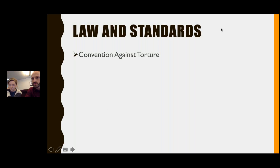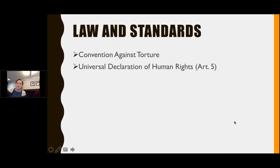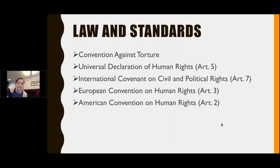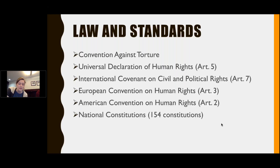How is health situated in the context of torture? The general definition of torture comes from the Convention Against Torture, but torture and other cruel, inhumane, or degrading treatment is also prohibited by the Universal Declaration of Human Rights, the International Covenant on Civil and Political Rights, the European Convention on Human Rights, the American Convention on Human Rights, and it's prohibited in 154 national constitutions. In the United States Constitution, it's prohibited by the Eighth Amendment.